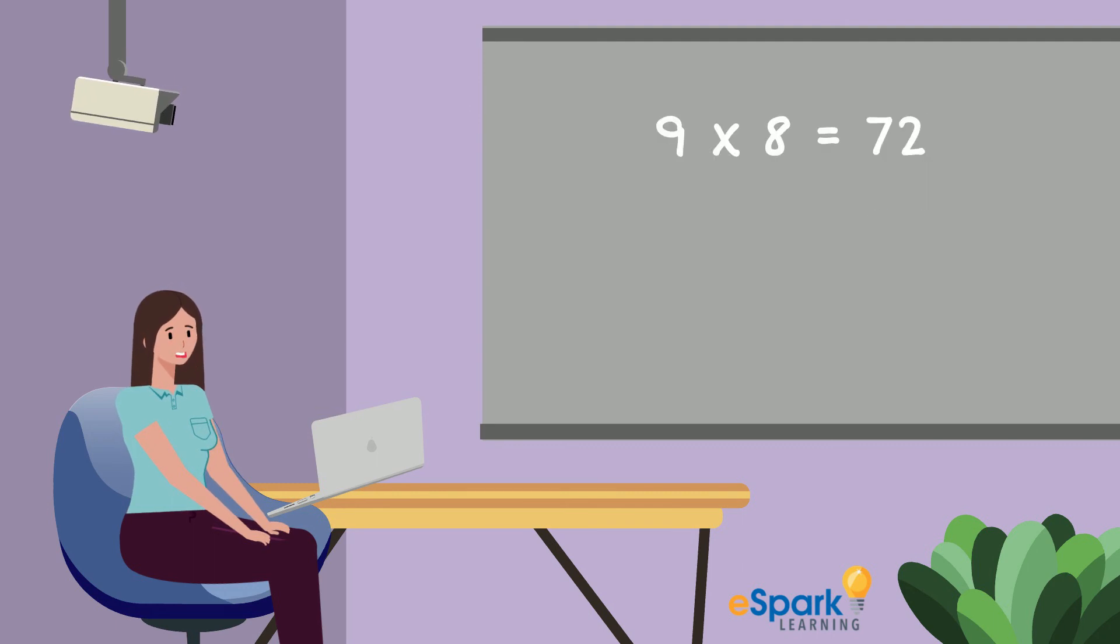If you know that 9 times 8 is 72, then you know that 8 times 9 is... You got it! Also 72!